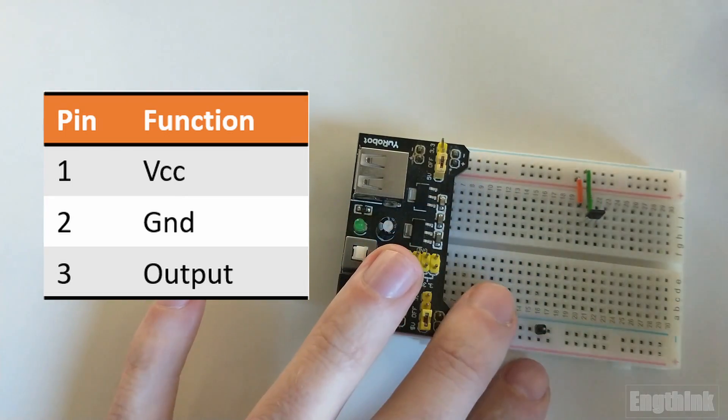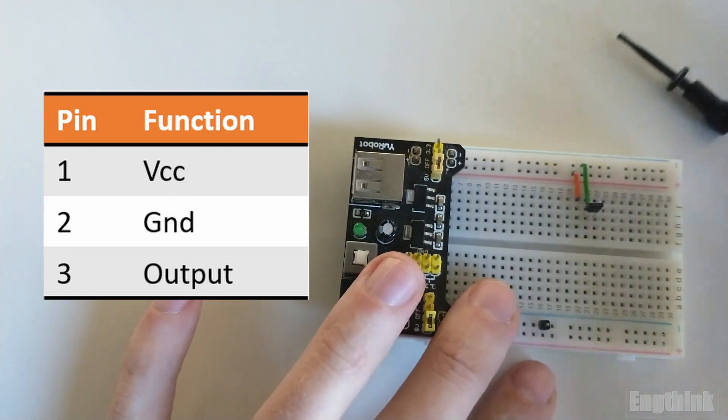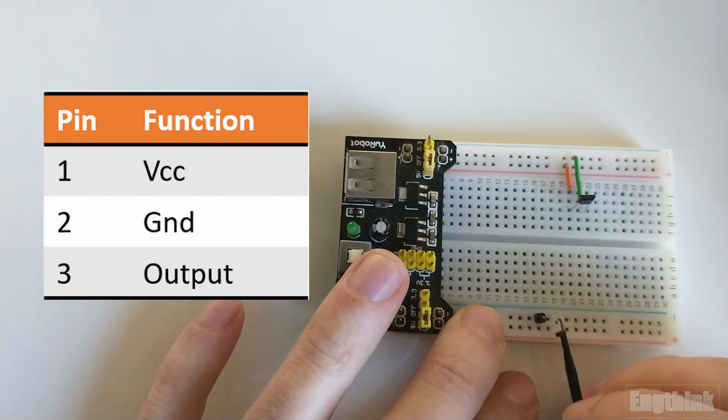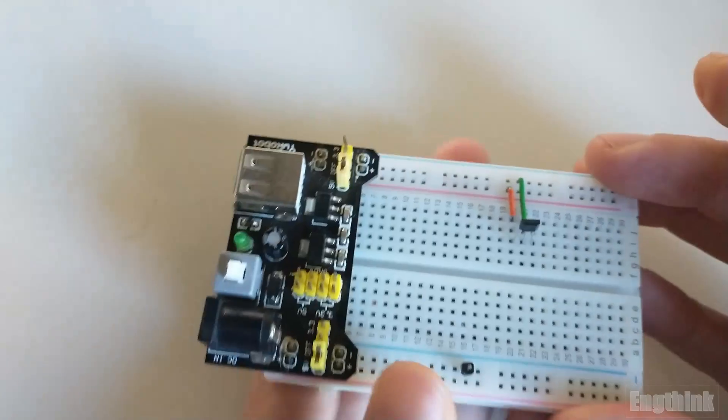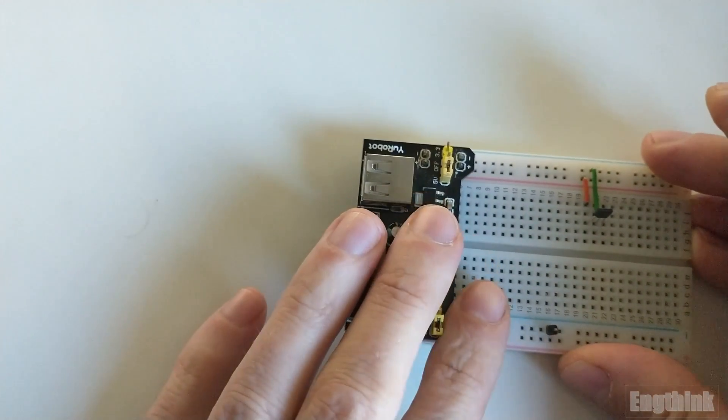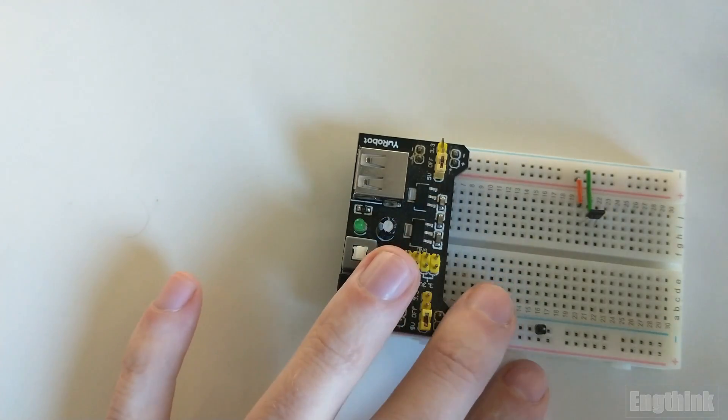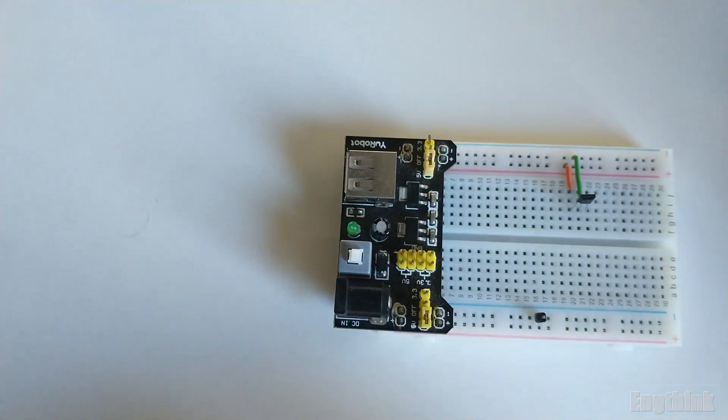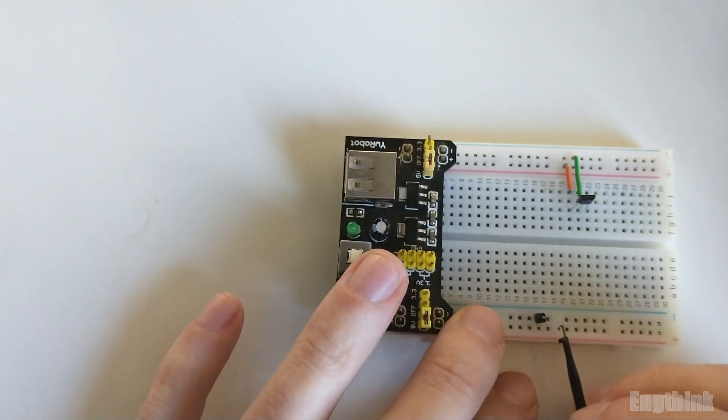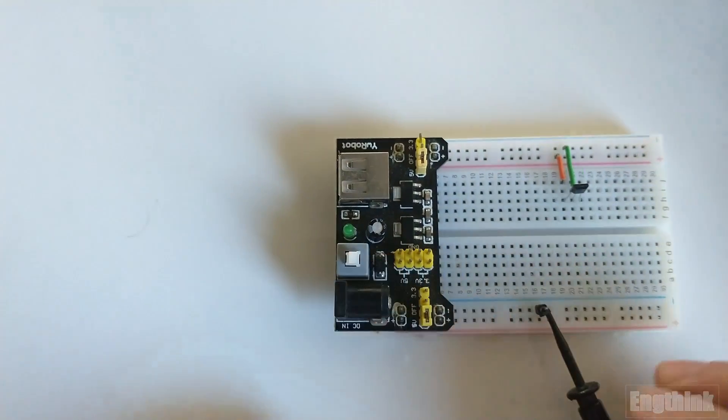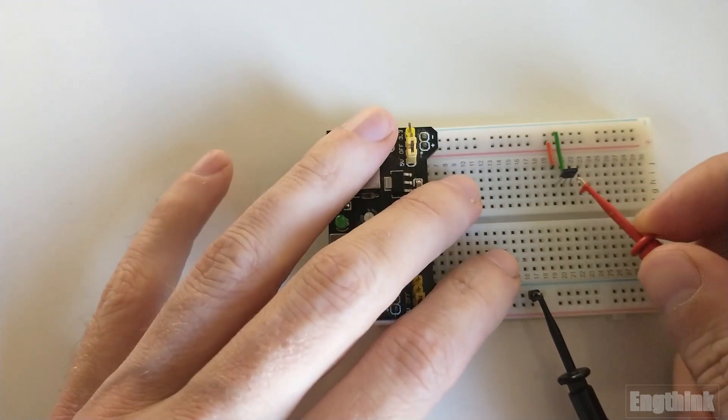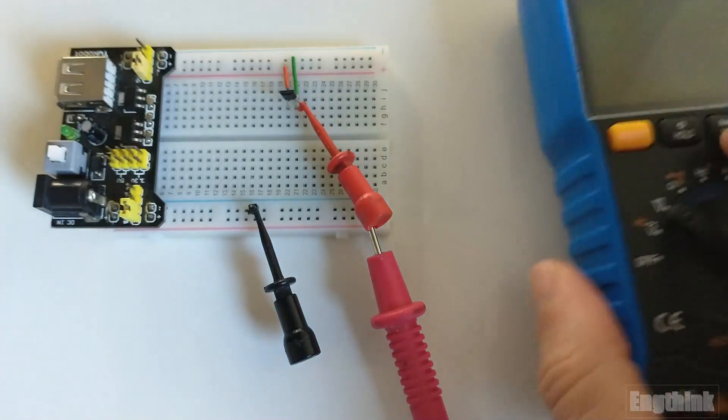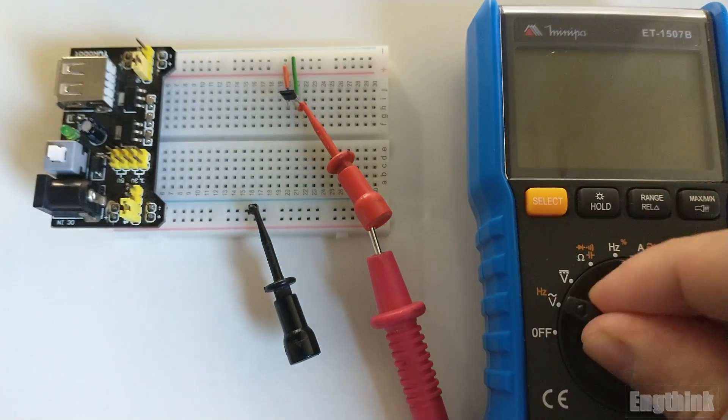Now, let's proceed with the multimeter connections to analyze the behavior of the Hall effect sensor output. Connect the black jack to the negative terminal and the red jack to the output of the Hall effect sensor. Let's turn on the multimeter and set it to the volts DC scale.